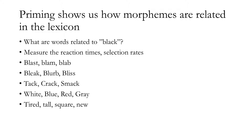Priming studies show us a lot about how morphemes might be related in the lexicon. A priming study is actually itself a metaphor of priming the well — when you pour in a little bit of water into some kinds of well, other water will start to come out. These are actually easy to do; they're designed in psycholinguistics labs all over the country. Basically, a simple one could be this: I could show participants the word 'black' on a screen and ask them to click on which of a set of words are related to 'black.' I could carefully structure it to test different types of similarity, measure reaction time, and measure how frequently one type of word is chosen as related to 'black' over other types. Once these studies are done over and over again, we see different types of relationships.